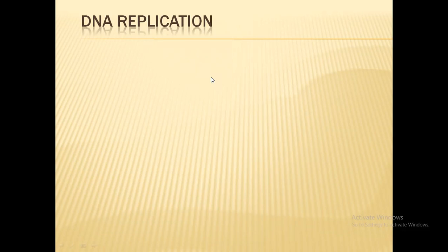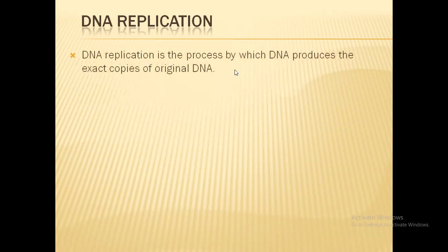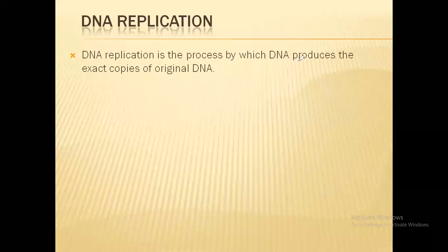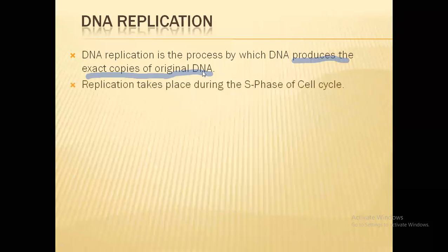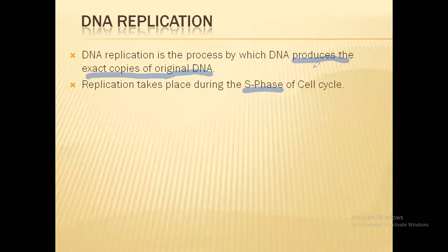So let's start. The very first point is DNA replication is the process by which DNA produces its own exact copy. The DNA replication takes place during the S phase, which is the synthetic phase of cell cycle.